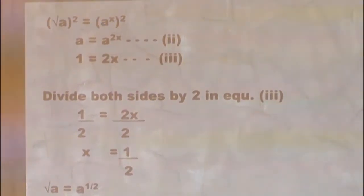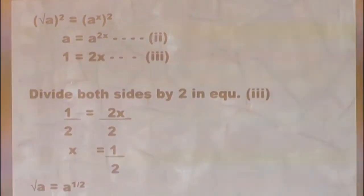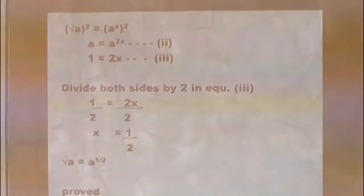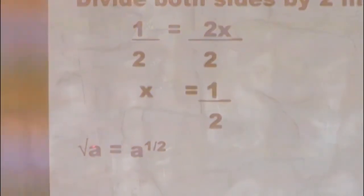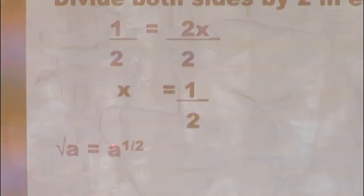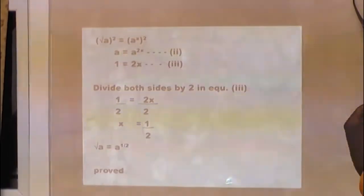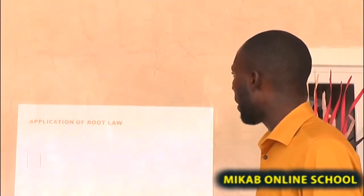Recall that we denoted x to be any arbitrary value of our choice. From the root law, the square root of any number equals that number raised to the power of 1 over 2. And from this solution, we have proved that x equals 1 over 2, which represents the power of a. The conclusion is that any time you have the square root of a, it equals a raised to the power of 1 over 2. We shall try to prove the cube root case in the next class. Now we are going to the application of the root law.